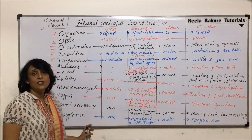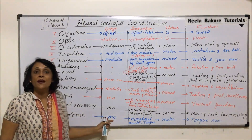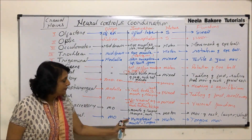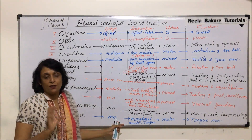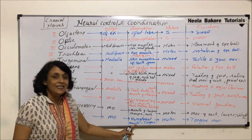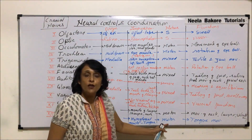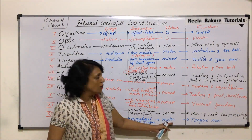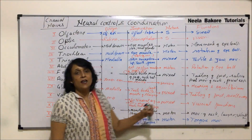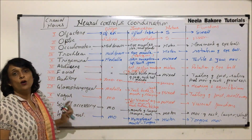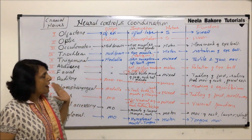The last cranial nerve is hypoglossal. It also arises from the medulla oblongata and goes to the hypoglossal muscle, which is at the lower part of the tongue. It is a motor nerve, and all tongue movements are controlled by the hypoglossal nerve.